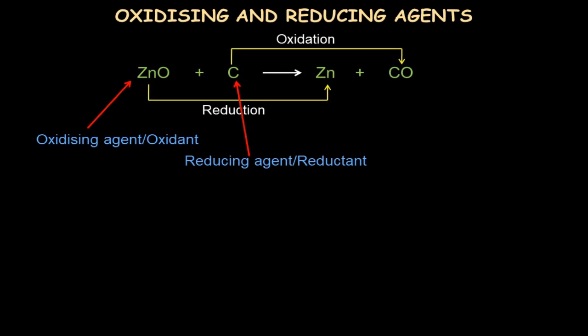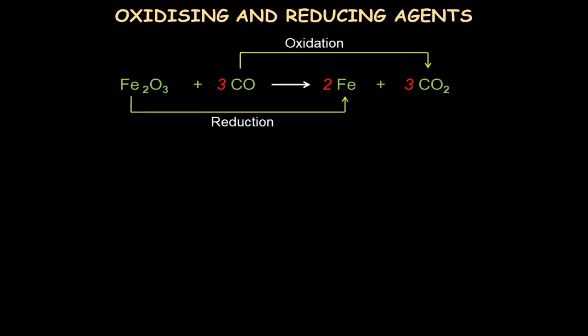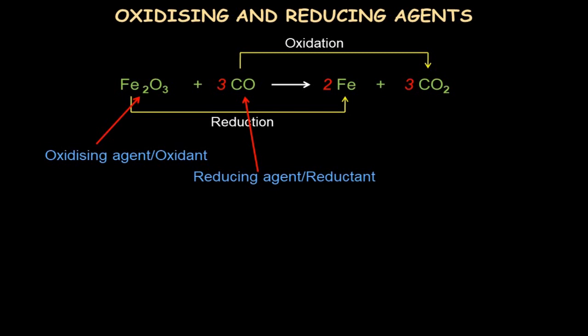In general: any substance that itself gets reduced is called an oxidizing agent or oxidant. A substance that itself gets oxidized is called a reducing agent or reductant. In the iron oxide example, iron oxide is getting reduced, so it is the oxidizing agent. Carbon monoxide is getting oxidized to carbon dioxide, so it is the reducing agent because it helped reduce iron oxide.